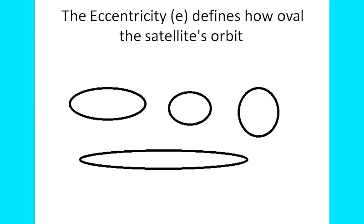Hi everyone, welcome to a new session on astrodynamics. Today we are going to see about eccentricity. So what is meant by eccentricity? Eccentricity is defined by the letter E and it defines how oval the satellite orbit is.